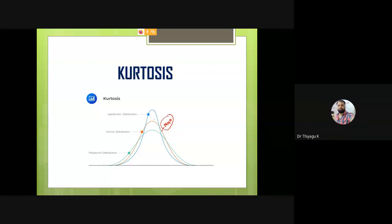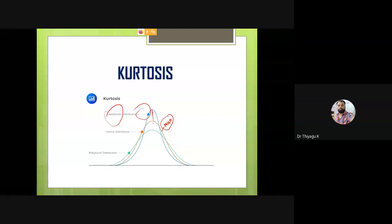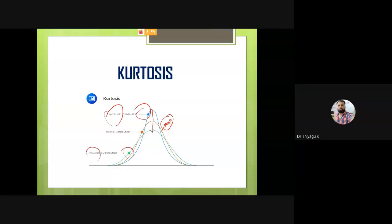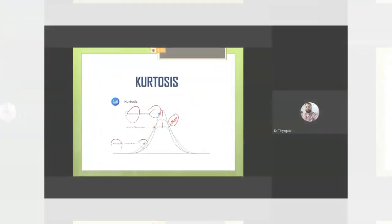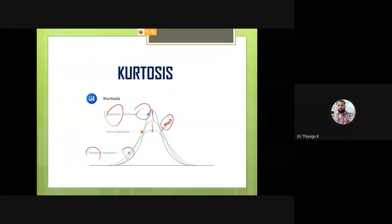If the curve is more flat, here we are comparing with the normal one. Compared to the normal, this graph is less, therefore it's called platy — if the curve is more flat than the normal, it's called platykurtic. The normal curve is also called mesokurtic. There are three ways we can classify the kurtosis. In this case, mean, median, and mode lie on the same point only — mean equal to median equal to mode.